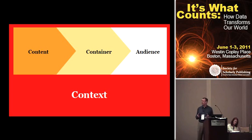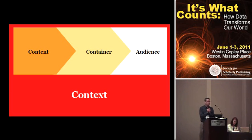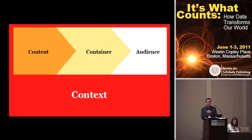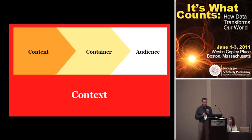Print gave publishers great control over the user experience — you knew exactly what people were going to do with a book. Mobile devices, and this is where it gets scary, take some of that control away from the publisher and share it with the reader and even with the developer of the device platform.